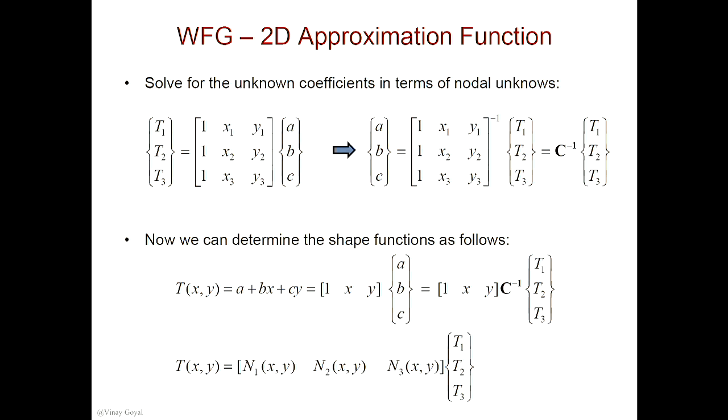So this is what you get for shape functions — N1, N2, and N3. When you do this multiplication right here, what you get is N1, N2, and N3. Now, this looks very messy, and I agree it is messy. So let's start with what A is. A here is the area of the triangle, which can be determined as one half the determinant of C bold. So if you take the determinant of C bold times one half, you get the area of the triangle.